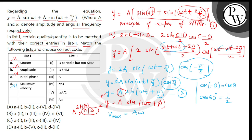तो हमें sequence मिलता है 2, 3, 4, 6 — means the correct answer is option B. Thank you.